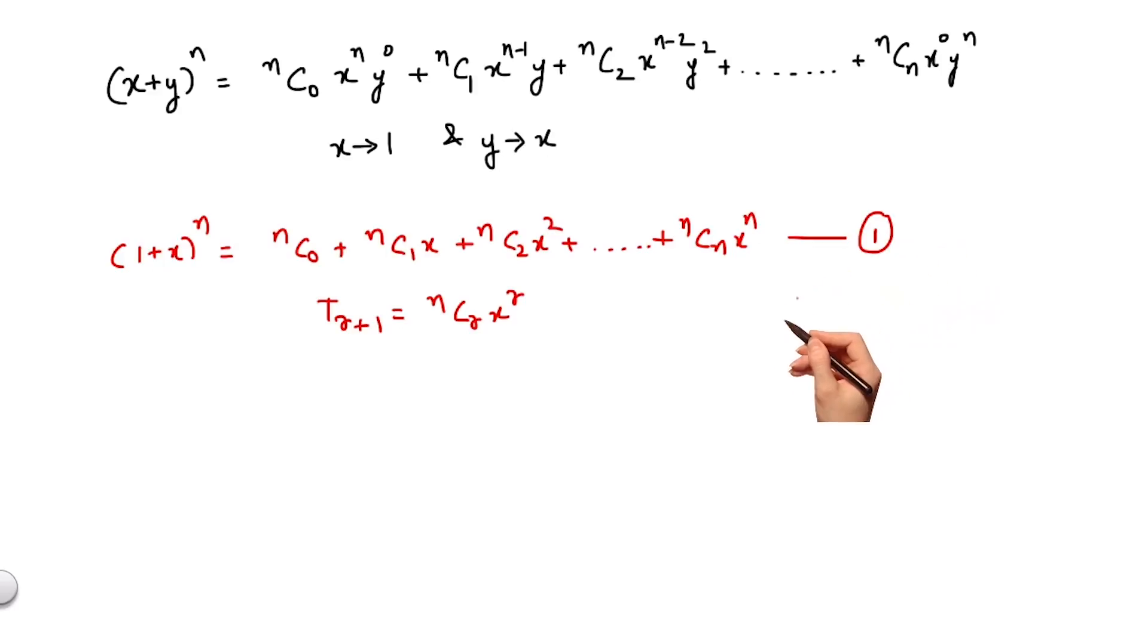Now if I replace x with -x in equation 1, I would get (1-x)^n equals nC0 - nC1·x + nC2·x² - nC3·x³ and so on with alternate positive and negative signs. Let us mark this as equation 2.